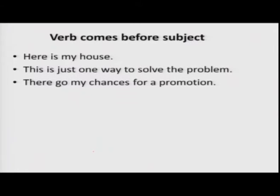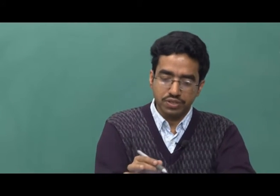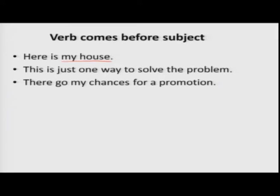In some sentences, the verb comes before the subject. For example: 'Here is my house,' 'This is just one way to solve the problem,' 'There go my chances for a promotion.' Nevertheless, the same rules apply. If the subject is singular, the verb is singular; if plural, the verb is plural. 'My house' is singular, so the verb is singular. 'One way to solve the problem' is singular, so the verb is singular. 'My chances' is plural, so the verb is also plural.